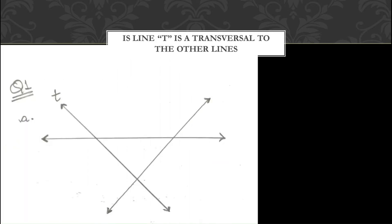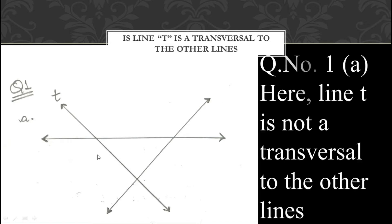Let us begin with part A. In this figure, you can see line T and we have to tell whether it is a transversal or not. In my previous video I told you that a transversal is a line which intersects parallel lines — or sometimes non-parallel lines — on 2 or more than 2 points. In part A, line T is not a transversal because it is not cutting the other lines on more than 2 points.